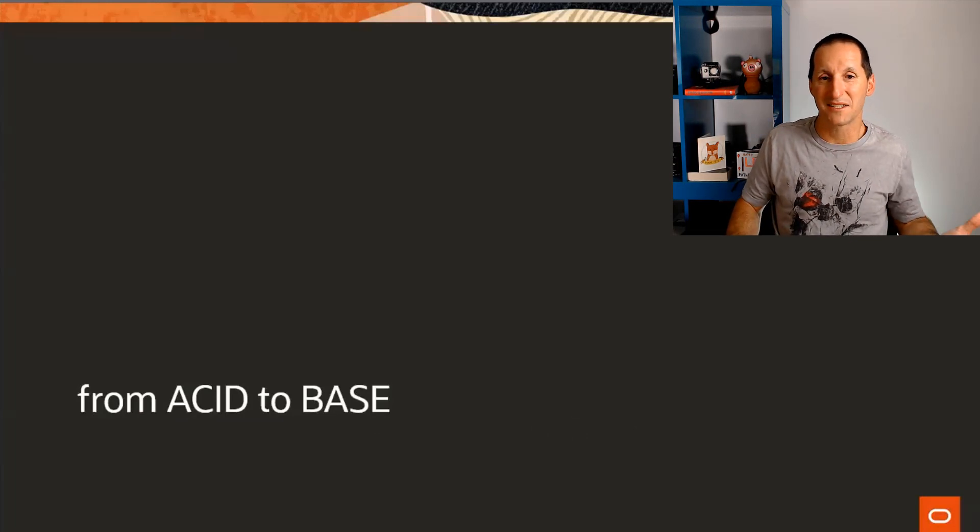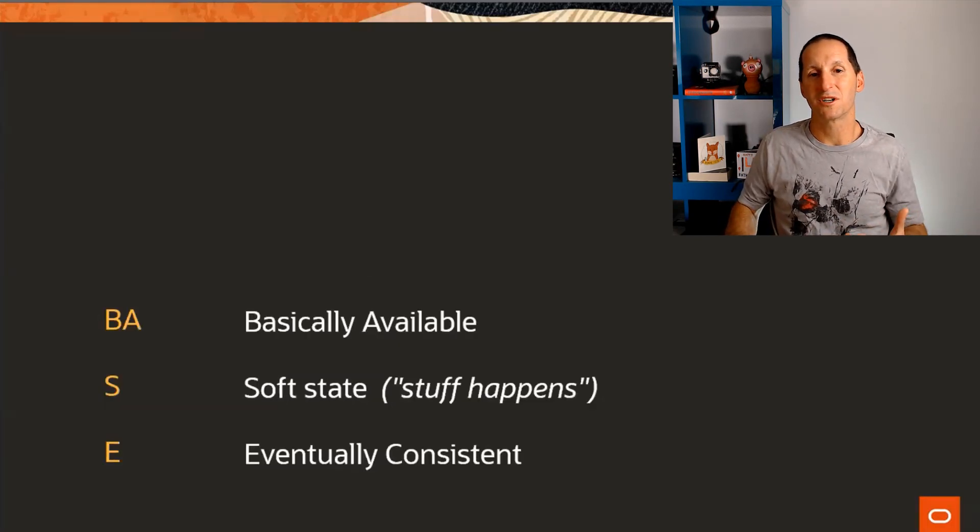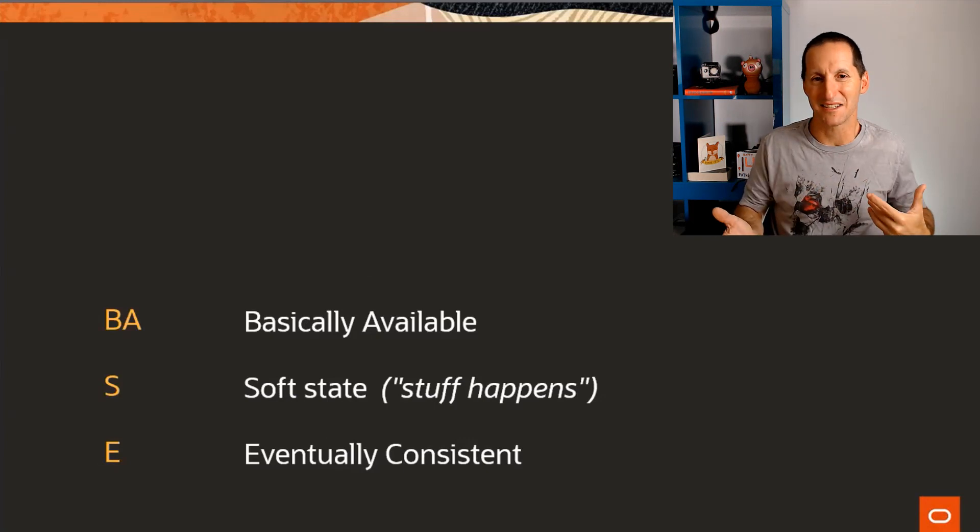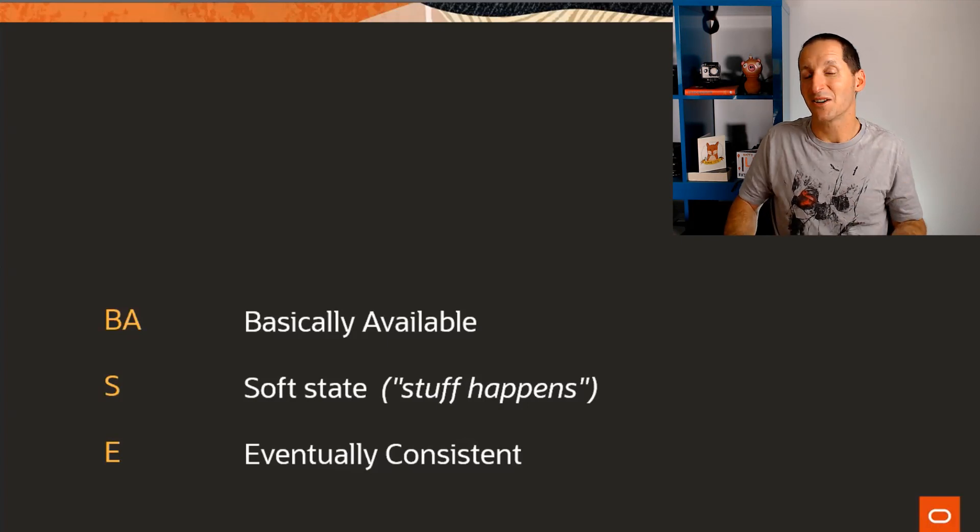And that moves us from what we call ACID to BASE. And most of us, I'm sure, are familiar with the ACID principle, which all relational databases that claim to be anything have the atomicity, consistency, isolation and durability. NoSQL systems are generally more concerned about BASE, which is really just a play on words to make it the opposite of ACID because really it's actually only three things. It's basically available, which means it's always going to be there. It's soft state.